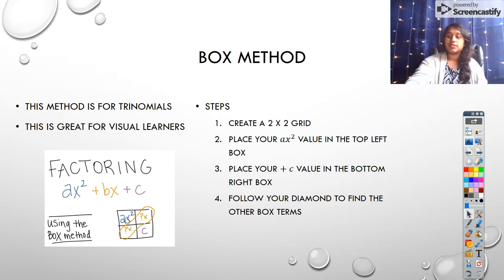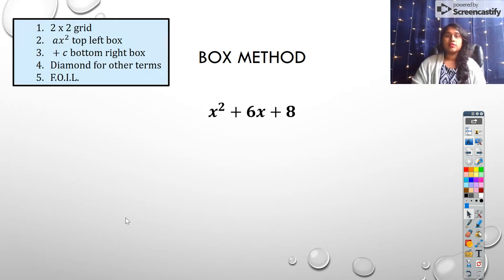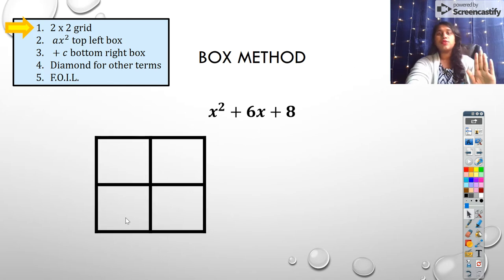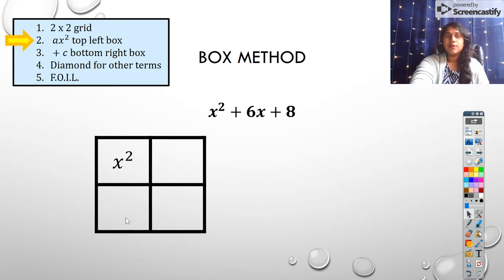Follow your diamond, and I'll show you what that means, to find your other box terms, and then multiply back to check. Always, always, always, we multiply back to check. So here's our first example, and we have x² + 6x + 8. So let's pull up those steps, 2x2 grid, ax² top left, +c bottom right, diamond for my other terms, foil, and check. And if we have an A value that does equal something other than 1, you may have to use a little bit of by grouping. Okay, so let's start with that 2x2 grid. This is what it's going to look like. And real quick, because I said I'm going to mention the diamond method, that's what this, we just literally create a diamond. And this is just going to get us those middle terms. That's all that means.